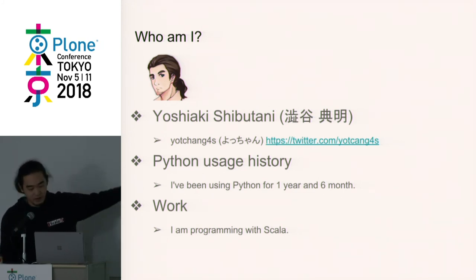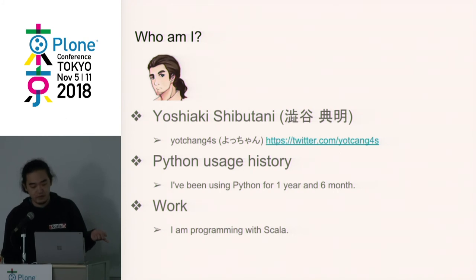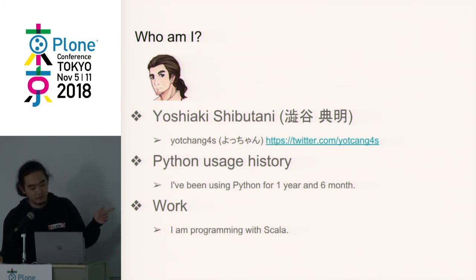Who am I? I am from Japan. My name is Yoshiyaku Shibutani. My nickname is Yotchan. My Twitter ID is Yotchan4S. My motto is Just Do It.